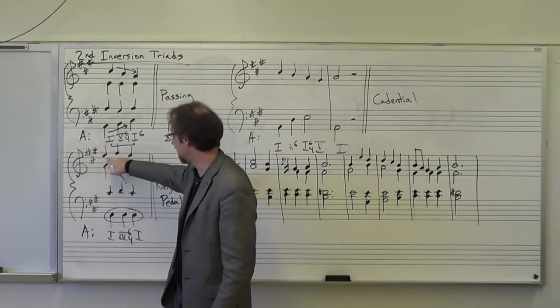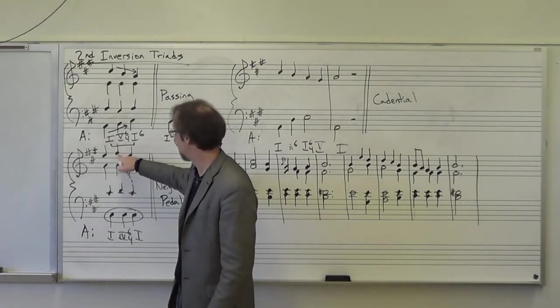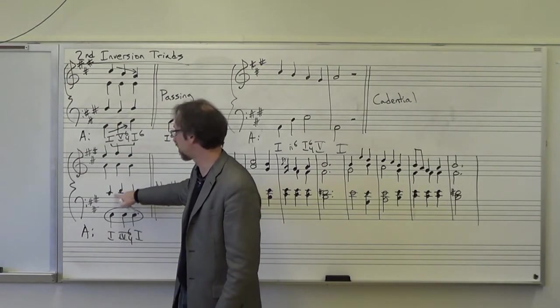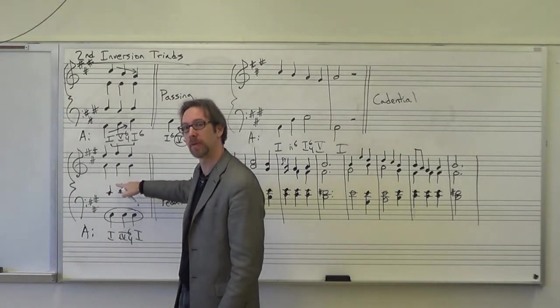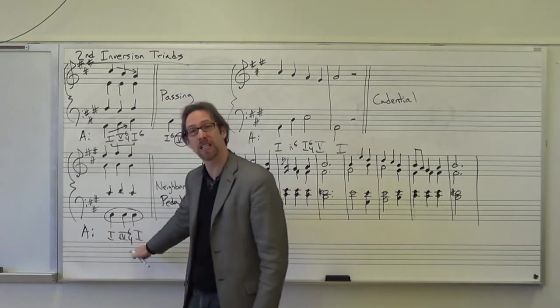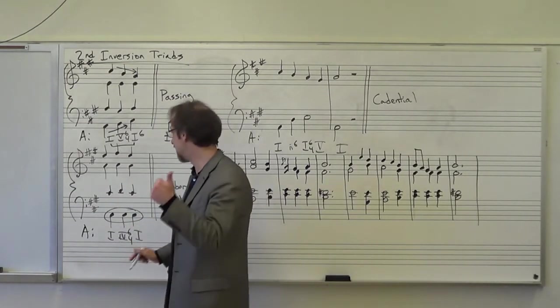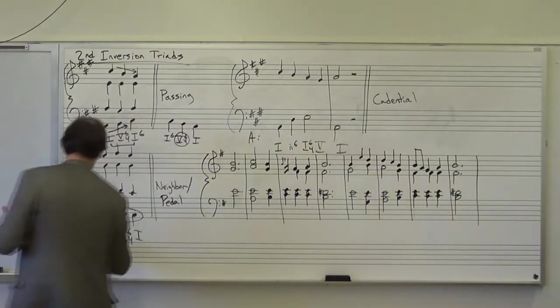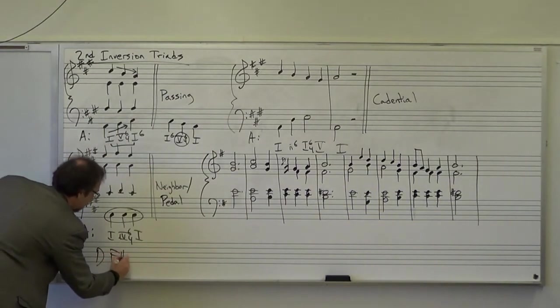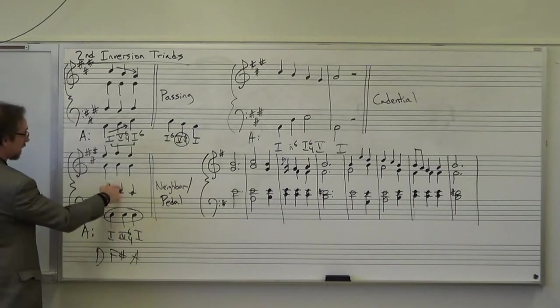Now, what will happen is that the E will step up to the F sharp in this case, and the C will step up. So a four chord is spelled D, F sharp, A. So we have our D here, our F sharp here, and we have two A's.